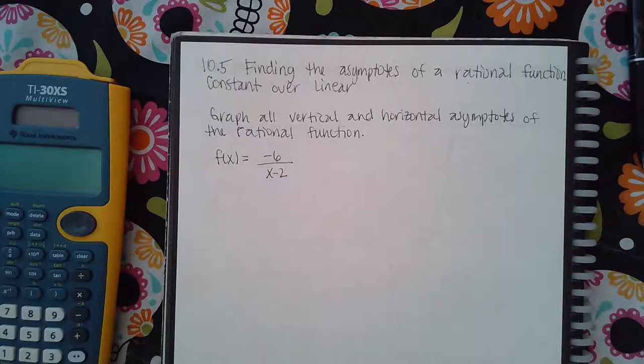Here we have problem 10.5, finding the asymptotes of a rational function, constant over linear. It wants me to graph all vertical and horizontal asymptotes of the rational function.